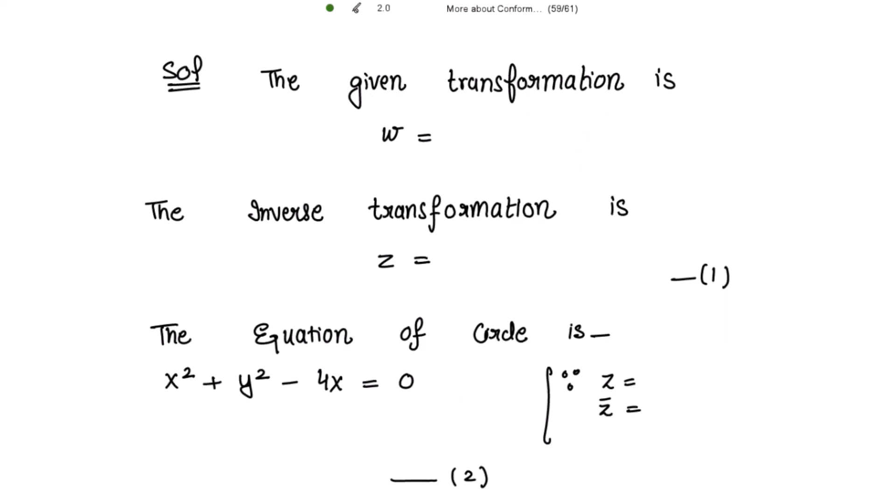So here the given transformation is w equals 2z plus 3 over z minus 4, and we have to write the inverse transformation, writing z in terms of w. So we get z equals 4w plus 3 over w minus 2. Please mark this as equation (1).